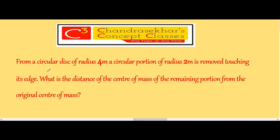From a circular disk of radius 4 meter, a circular portion of radius 2 meter is removed touching its edge. What is the distance of the center of mass of the remaining portion from the original center of mass?